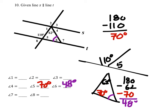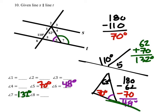Angle 7 — you could do 180 minus 48 degrees, or some of you would just add 62 plus 70; it doesn't really matter. I like adding, so 62 plus 70 degrees equals 132 degrees for angle 7. Angle 8 is vertical with angle 5, so that also would be 70 degrees. Since lines S and T were parallel, angle 5 and angle 1 are alternate interior angles — so angle 1 also would be 70 degrees.